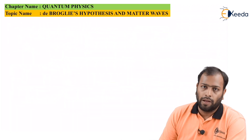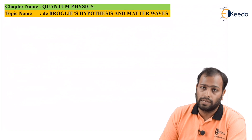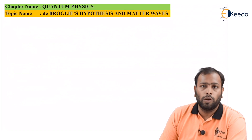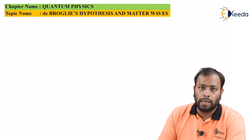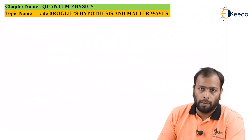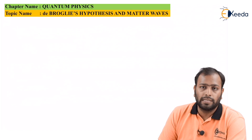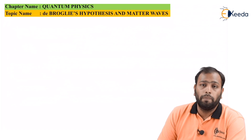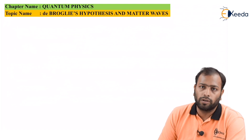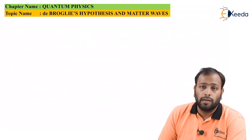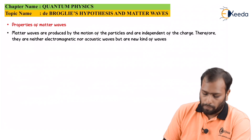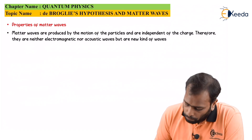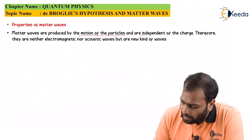Now let's study the properties of matter waves. Matter waves are the waves produced by particles moving with a velocity, according to De Broglie. All the points here could be asked as an important theory question — they have been asked in alternate years in previous examinations. The first property is: they are produced by motion of the particles and are independent of the charge.